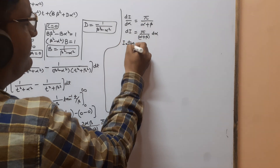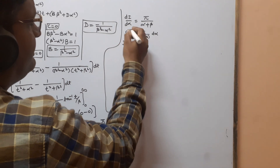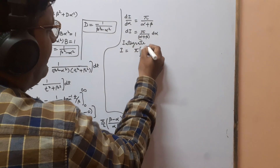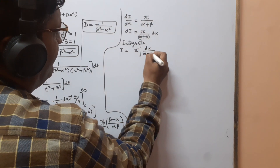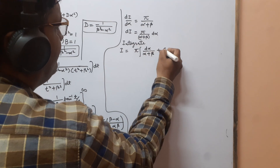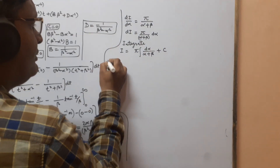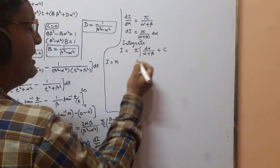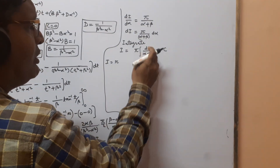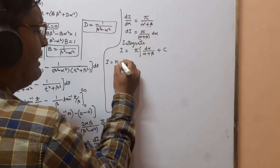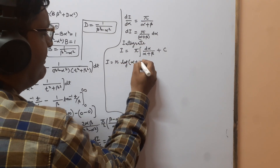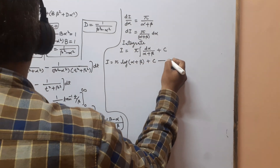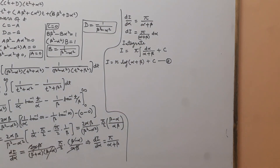Since dI/dα = π/(α + β), we write dI = π/(α + β)·dα. Integrating both sides: I = π·log(α + β) + C, where C is the integration constant. (This is equation 2.)